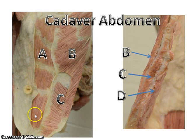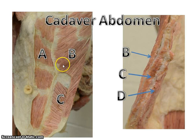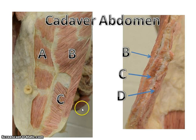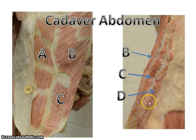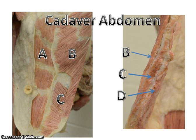Just real quick again on the cadaver abdomen — remember you've got the rectus abdominis, you've got the external obliques, you can actually see the internal obliques. When you look here you can see the layers: the external oblique, the internal oblique, and the transversus abdominis. Again, review and practice.